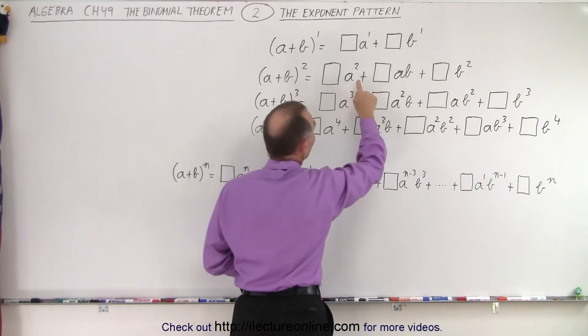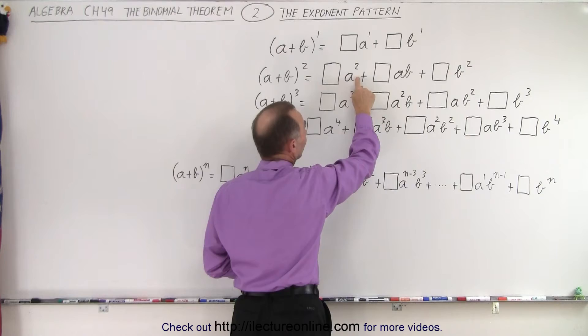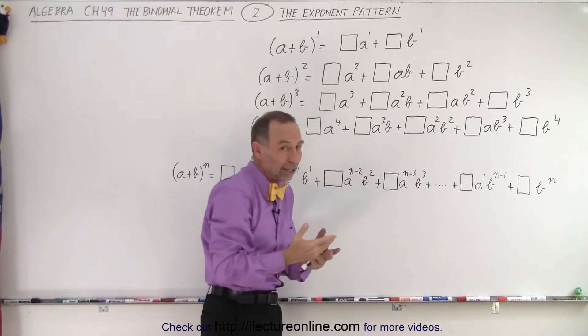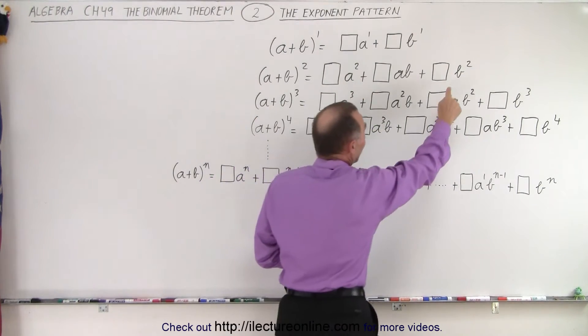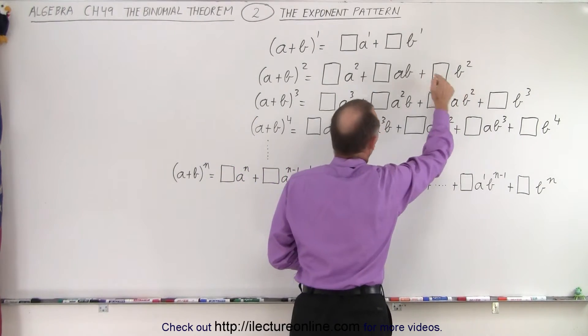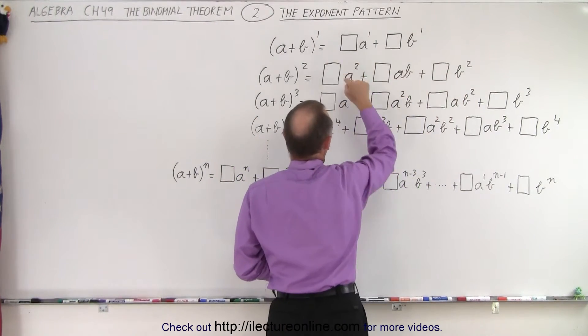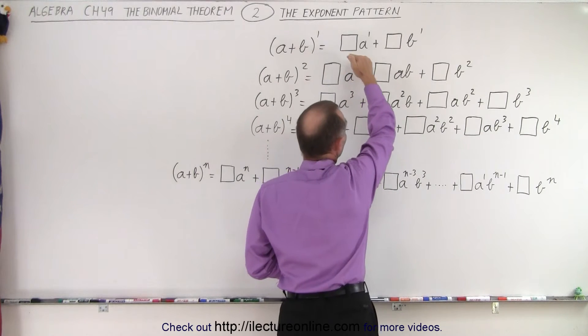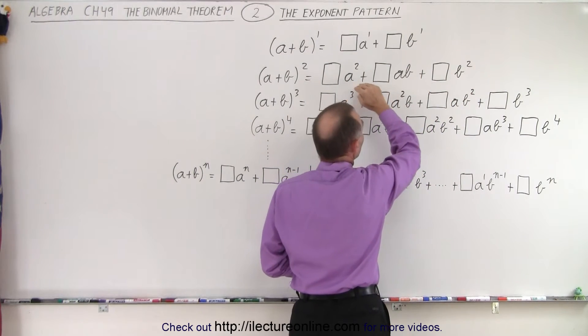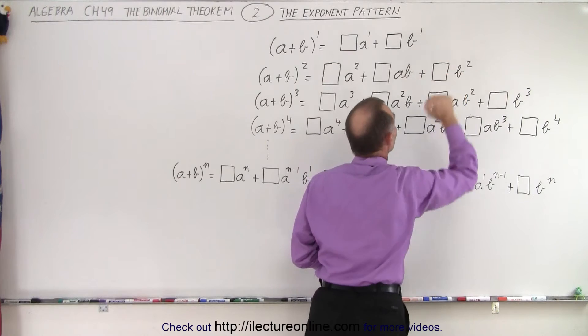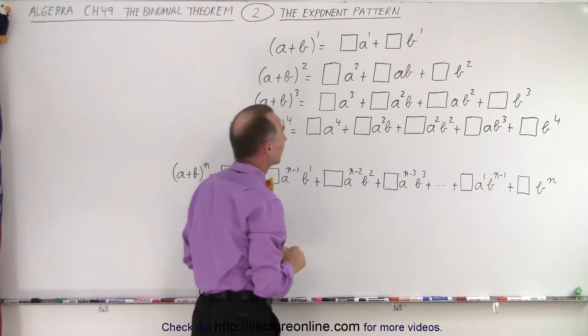Essentially we have b to the zero here — and of course anything to the zero is one — and here we have a to the zero. So we have the first term with an exponent in descending order, and the second term with the exponent in ascending order.